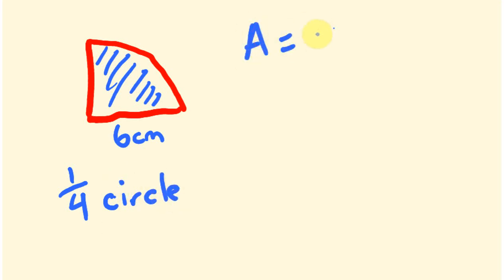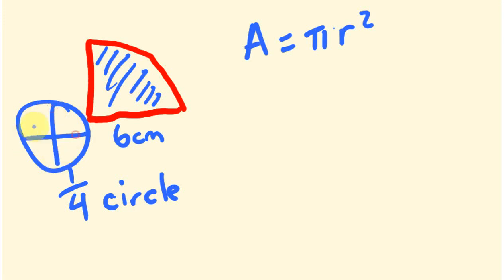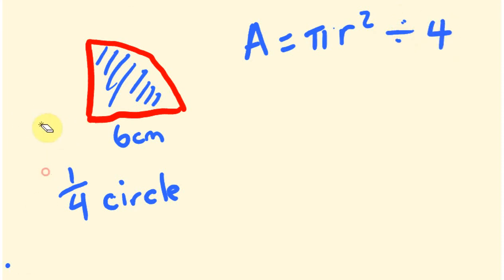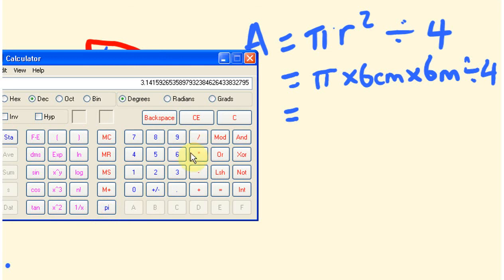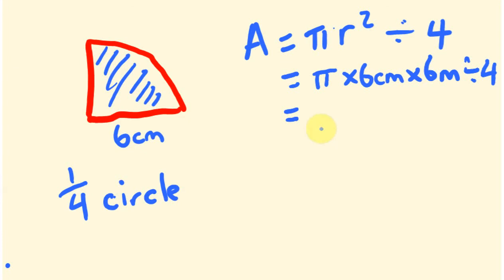The area equals pi r squared, but because it's a quarter of a circle we're going to divide our answer by four. So this equals pi times the radius — 6 centimeters — times 6 centimeters, divided by four. Pi times 6 times 6 divided by 4 equals 28.27. So the area equals 28.27 centimeters squared.